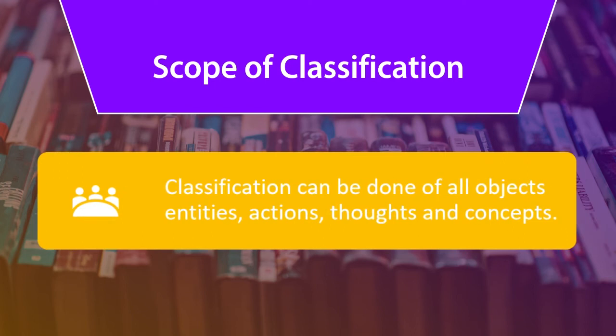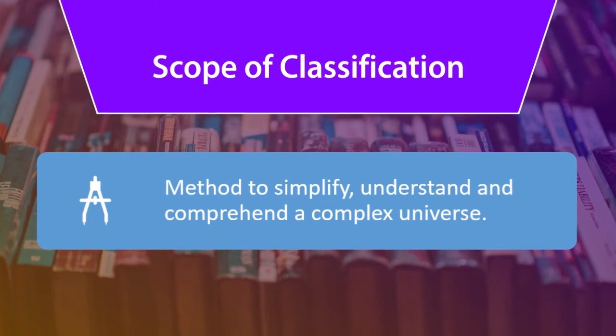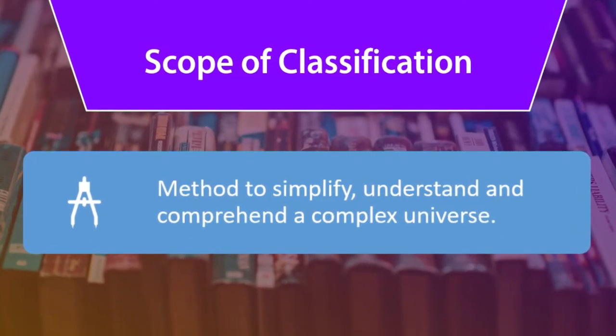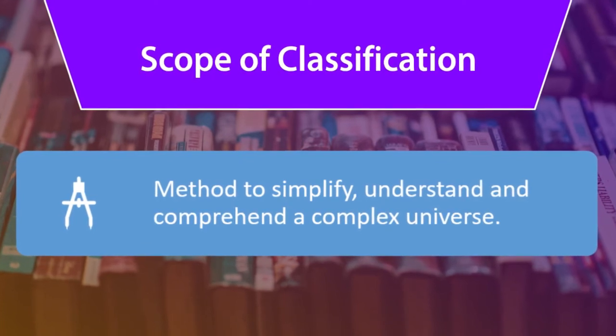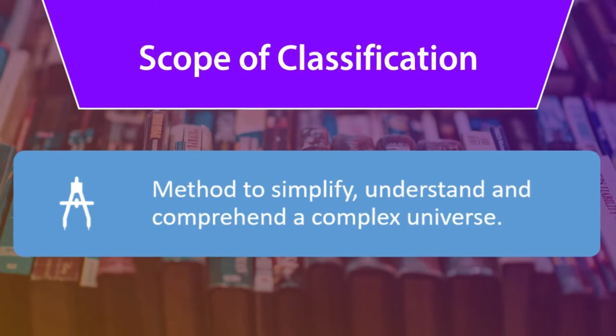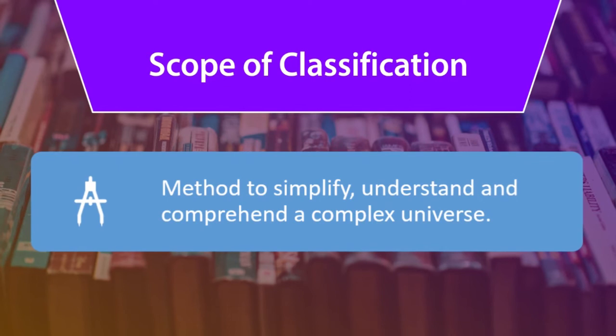Classification can be done of all objects, entities, actions, thoughts, concepts, and so on. We can classify people, countries, natural phenomena, plants, flowers, animals, libraries, philosophies, literature, automobiles, and you name anything. You can classify. It is a universal concept and universal constant.